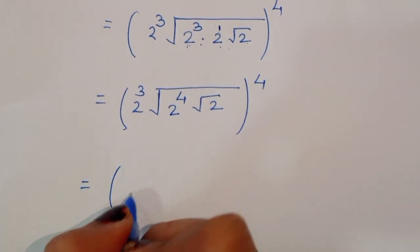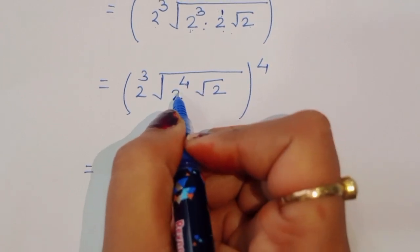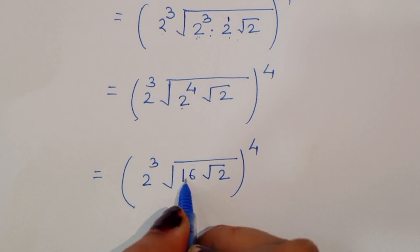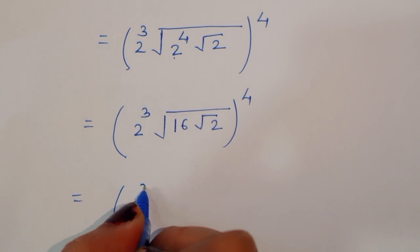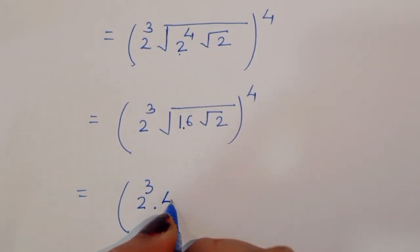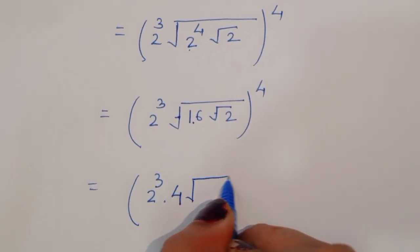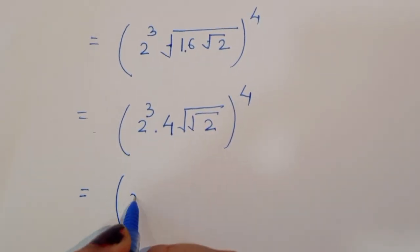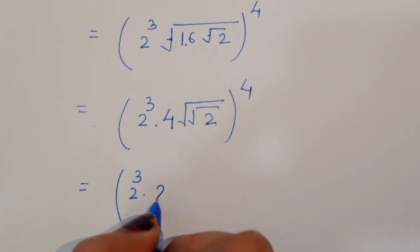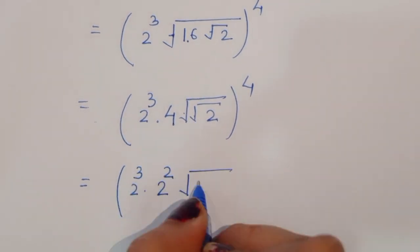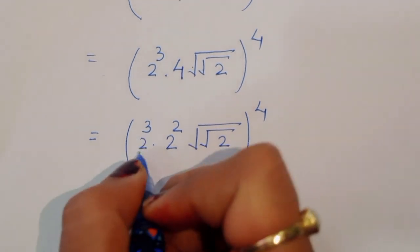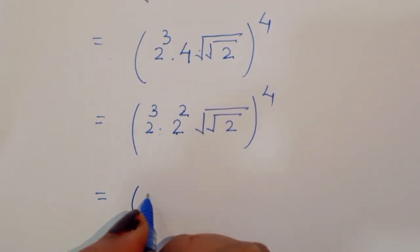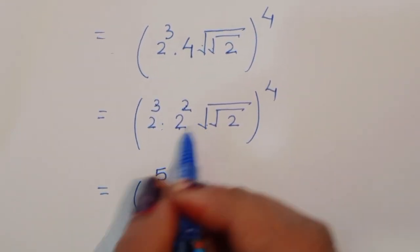We have 2 power 4 which is 16, so square root of 2 power 4 equals square root of 16 equals 4. So we write 2 power 3 times square root of 16, which is 4, written in power form as 2 power 2. Using the formula a power m times a power n equals a power m plus n, we get 2 power 3 plus 2 equals 2 power 5, and we still have square root under square root of 2 power 4.